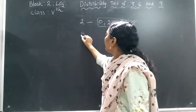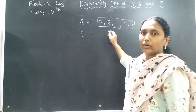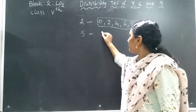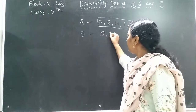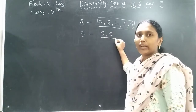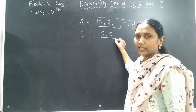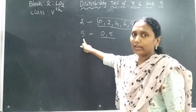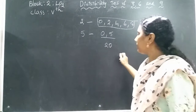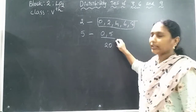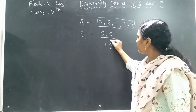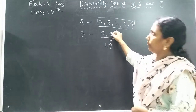Now for the number 5 — what digits do we need at the ones place? The answer is 0 and 5. When there is 0 or 5 in the ones place, that number is divisible by 5. For example, 20 is divisible by 5 because its ones place has 0.